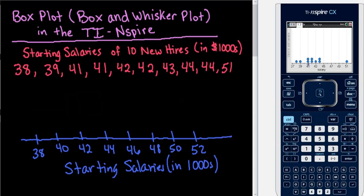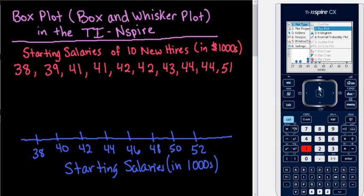And it defaults to a dot plot. So you can see that each of the points is represented on here on the dot plot. And then what I'm going to do is I'm going to hit menu and the plot type, which is option 1. And I want to do a box plot, which is option 2.